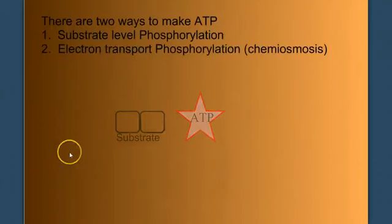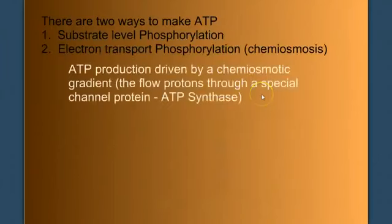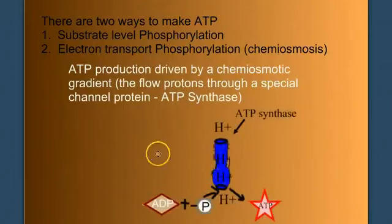In electron transport phosphorylation, ATP production is driven by a chemiosmotic gradient, the flow of protons through a special channel protein that we call ATP synthase.